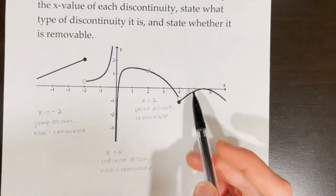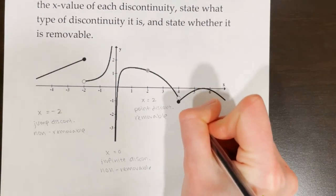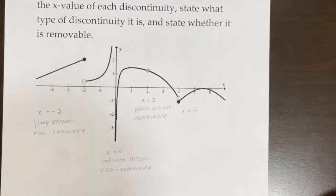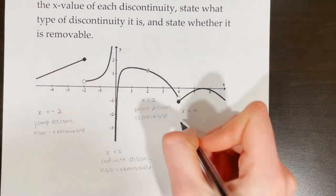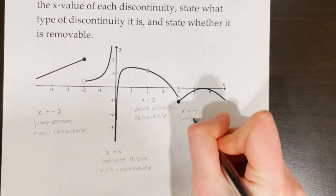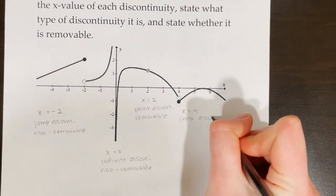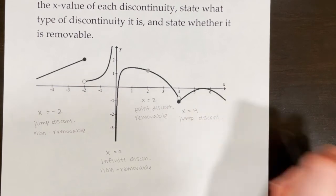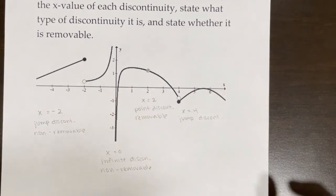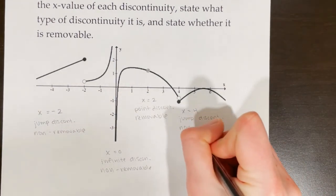Our last discontinuity is occurring at x equals 4 — it's another jump discontinuity, and jump discontinuities are non-removable.